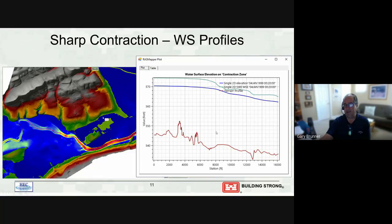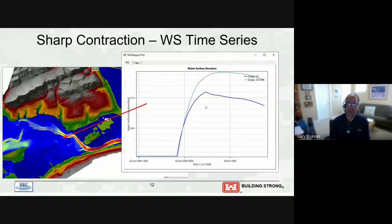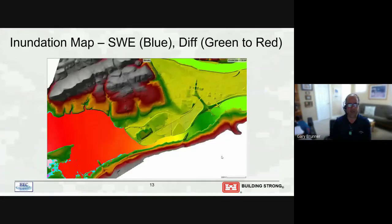Through the contraction and expansion, the shallow water equations produce higher water surfaces because velocities are slower due to the contraction and expansion forces. Using diffusion wave, you'd be four feet too low at that location. A hydrograph at one location confirms: at low flow when all water was in the channel, both equations gave the same answer since there was no contraction. But once flow got into the overbank and contraction increased, a four-foot difference emerged at peak flow.